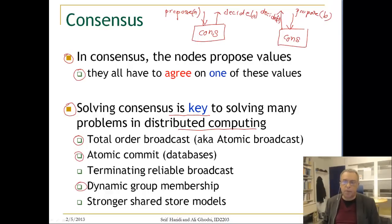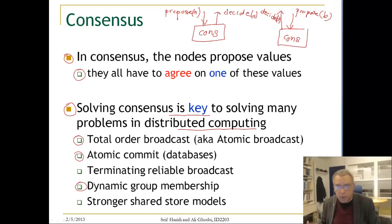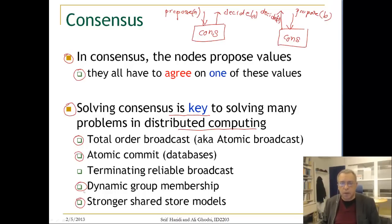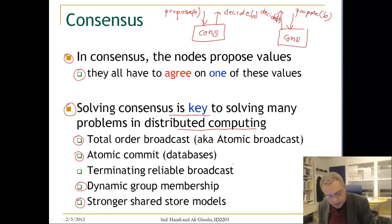Another application is dynamic group membership, where we have been discussing a fixed number of nodes, but sometimes we want to vary the number of nodes — if some nodes fail, other nodes can join the system. We also use consensus for stronger shared memory models allowing operations like read, write, modify, and locks. We will see that some problems, such as terminating broadcast, cannot be solved even in a partially synchronous system.